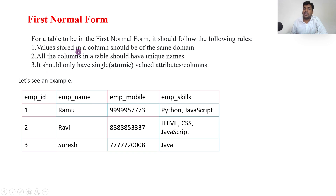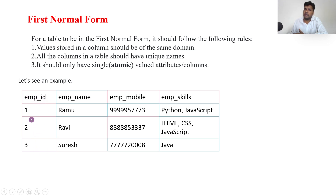The rule for first normal form (1NF): the value stored in a column should be of the same domain. For example, if employee ID is a number, you cannot enter text there. Also, all columns in a table should have unique names — there should be no repetition of column names.